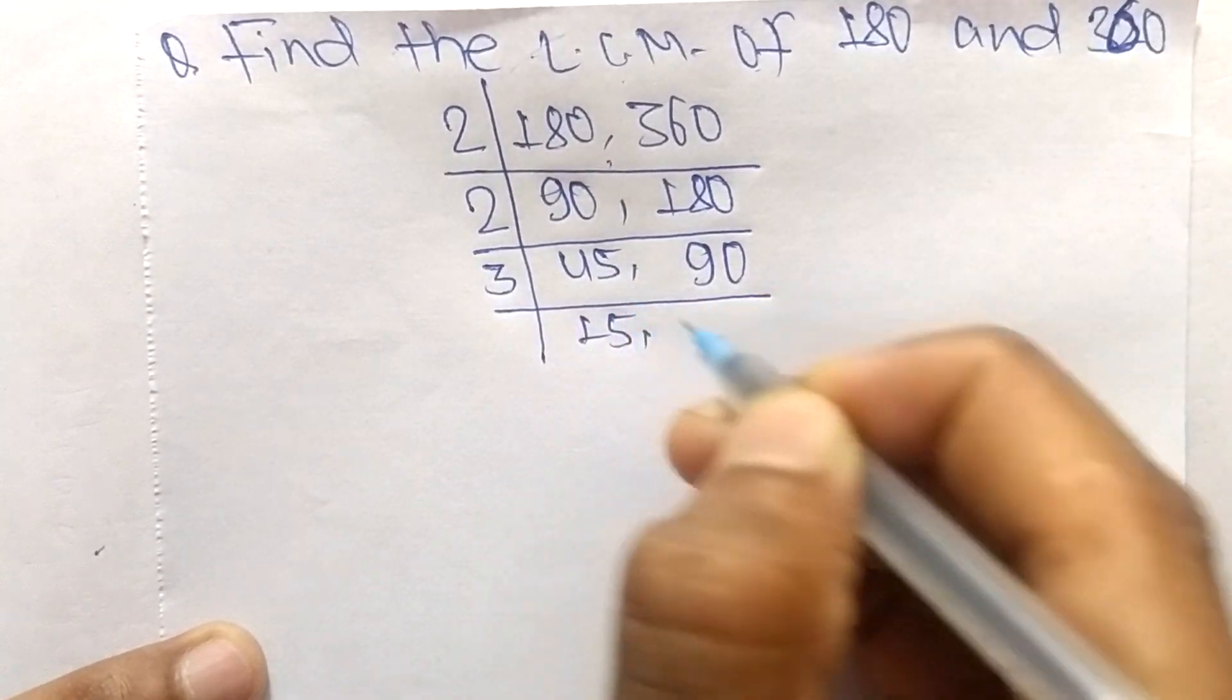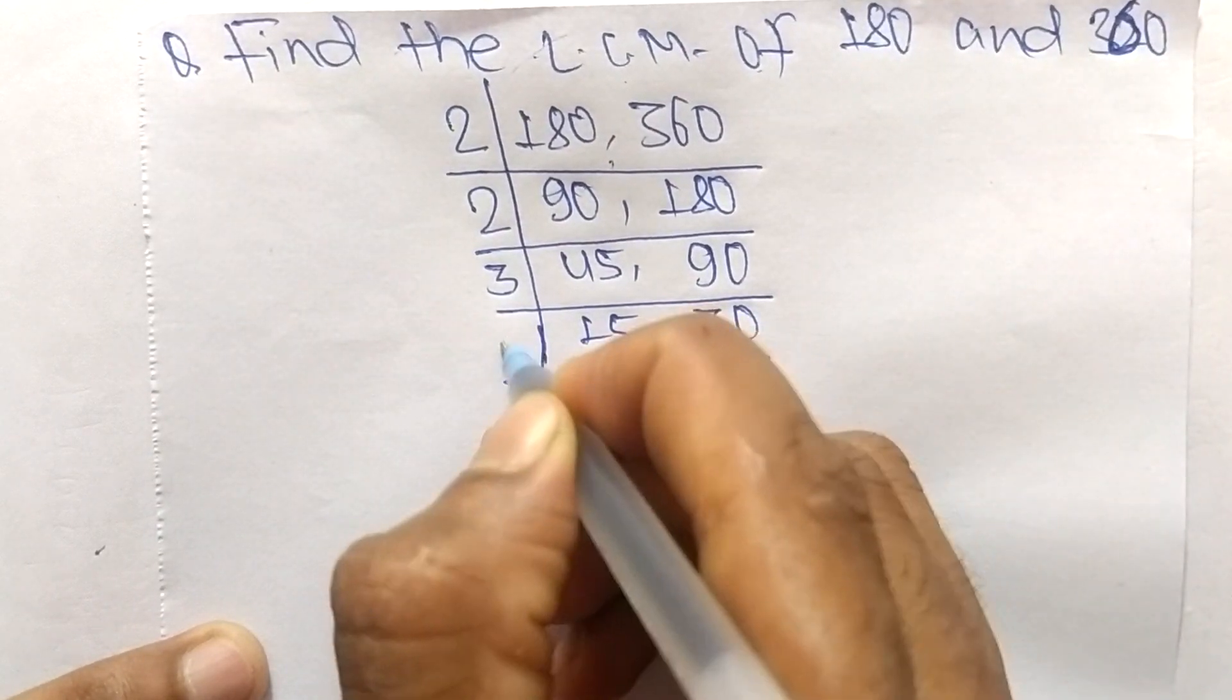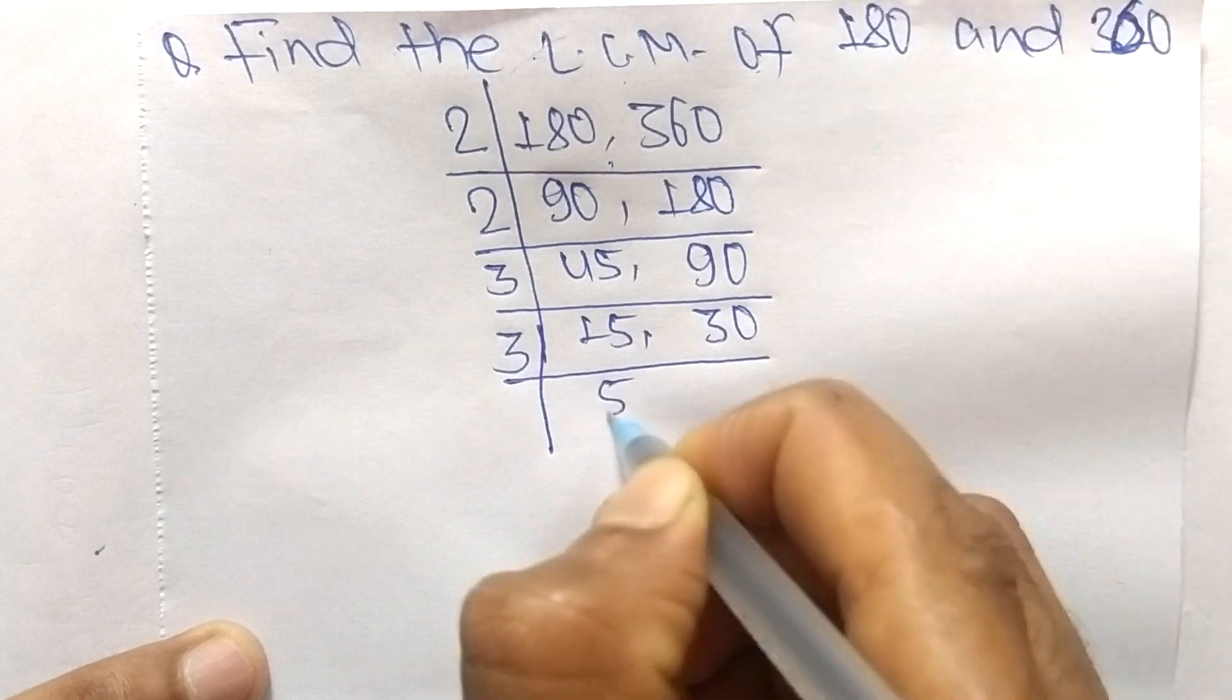3 times 15 means 45, 3 times 30 means 90. Again it is divisible by 3, so 3 times 5 means 15, 3 times 10 means 30.